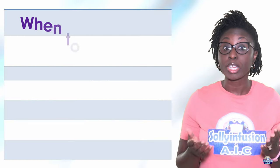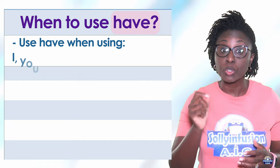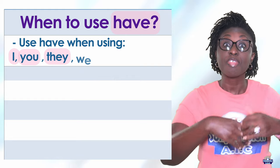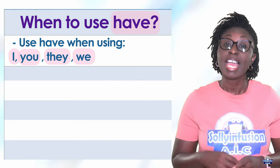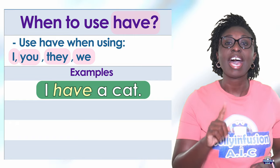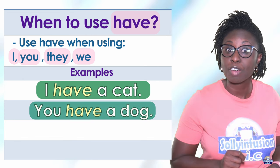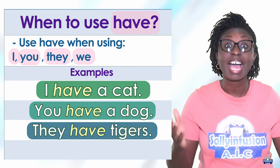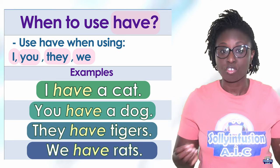Use have when using I, you, they, or we. Let's look at some examples. I have a cat. You have a dog. They have tigers. We have rats.